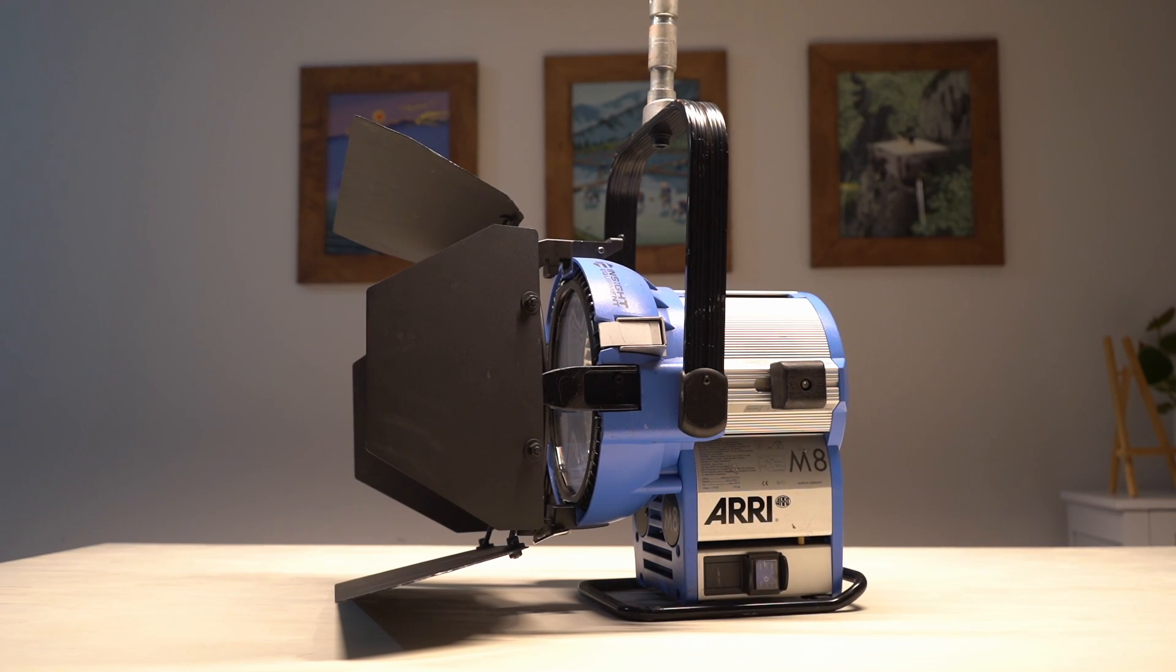The head has a few very important components including the yoke, the barn door, the bulb, the glass door to the bulb, the spot and flood, the silver reflector, and the power switch.